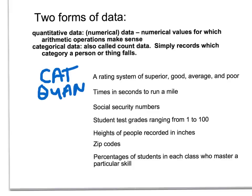Social security numbers are like area codes. It does not make sense to have an average — it doesn't make sense that your social security number is something point five. So even though it's a number, we would consider this categorical.